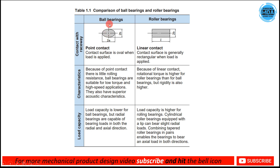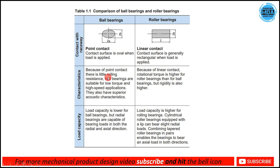A ball makes point contact and a roller makes linear contact. Under a loaded condition, the point contact deforms into an oval shape, and a loaded roller contact becomes rectangular. Ball bearings are suitable for low torque and high speed applications; roller bearings are suitable for high rotational torque and high rigidity applications.